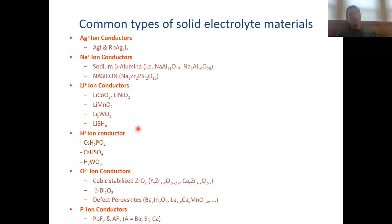We also know solid-state proton ion conductors. For instance, cesium dihydrogen phosphate, cesium hydrogen sulfate, or tungsten bronzes are good hydrogen ion conductors.